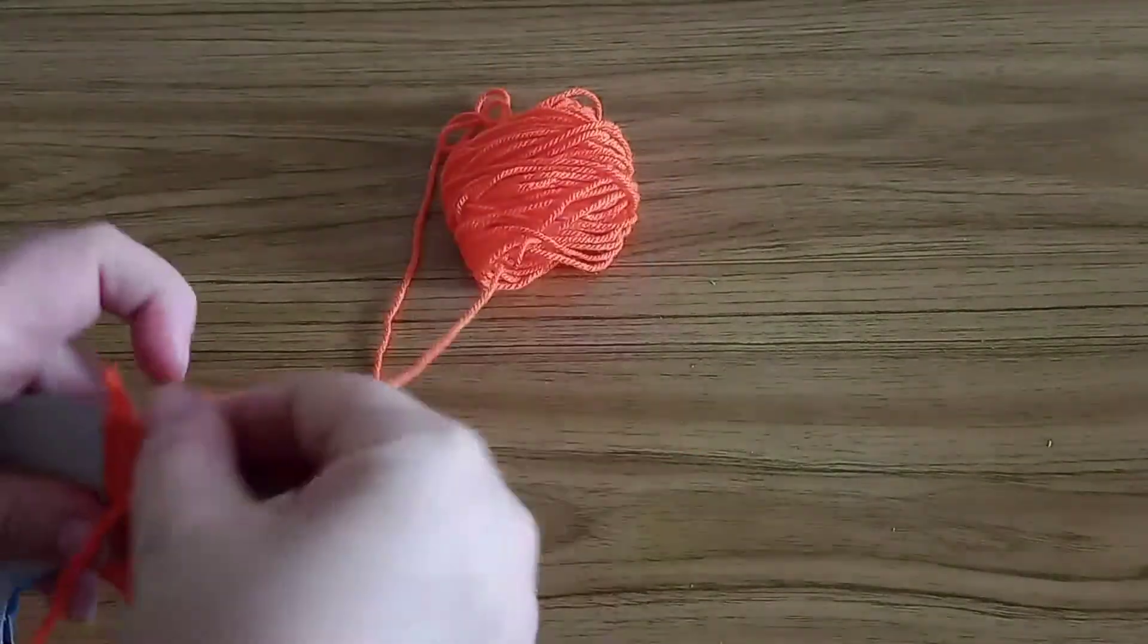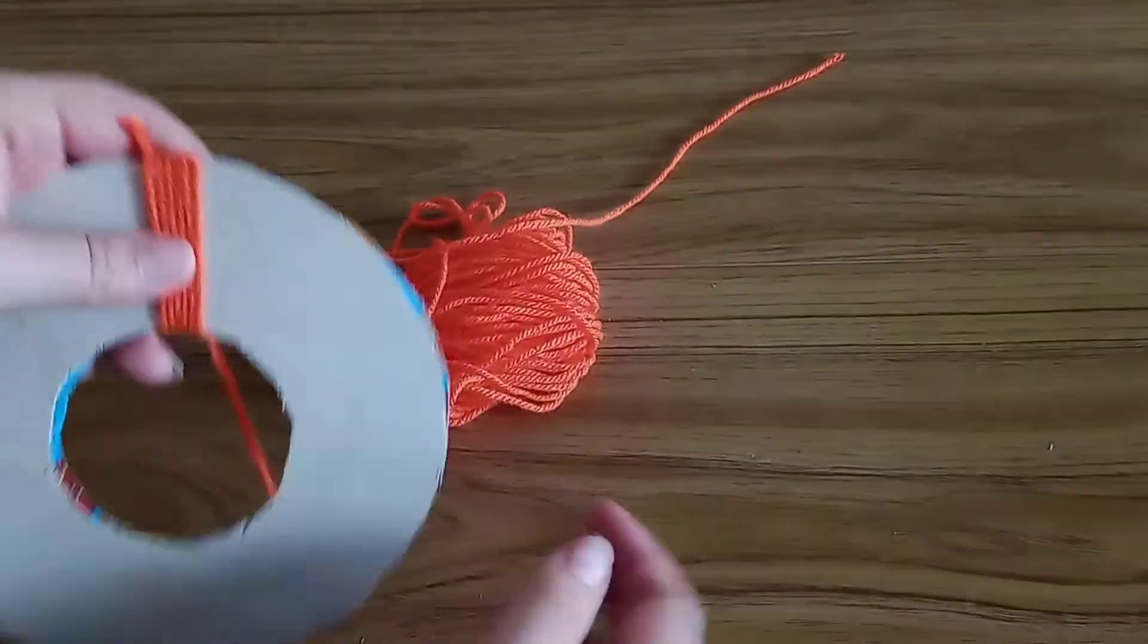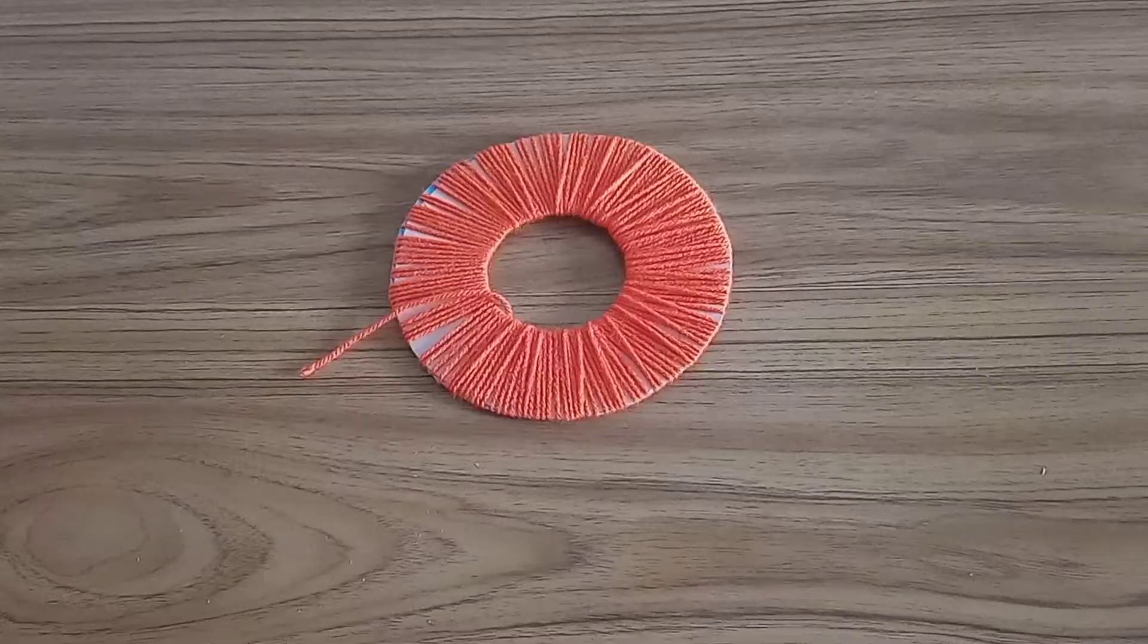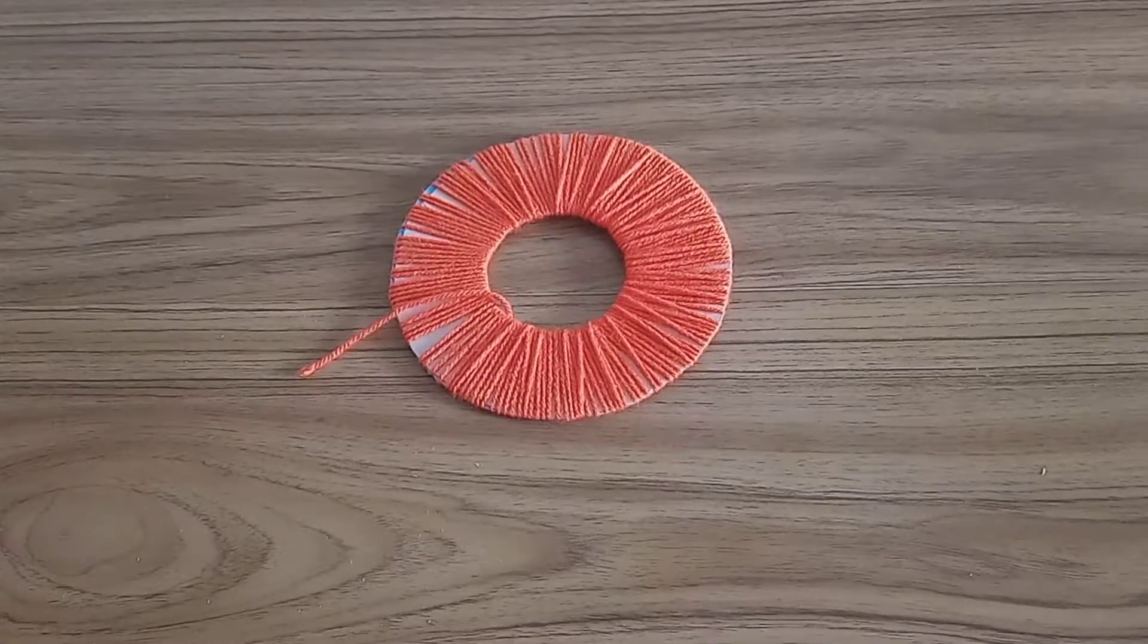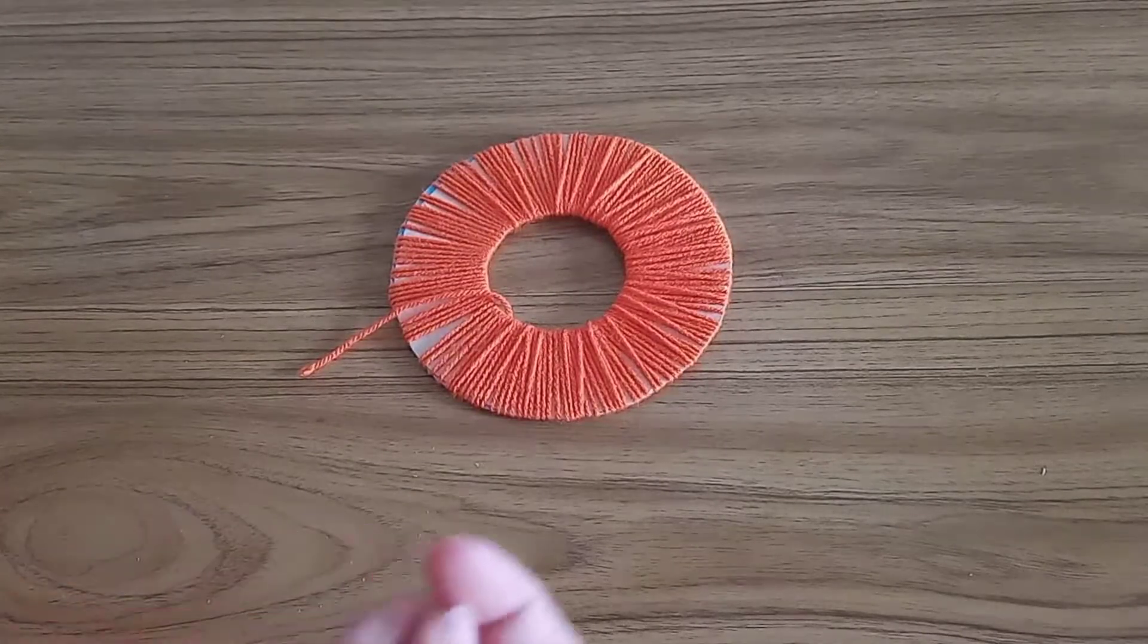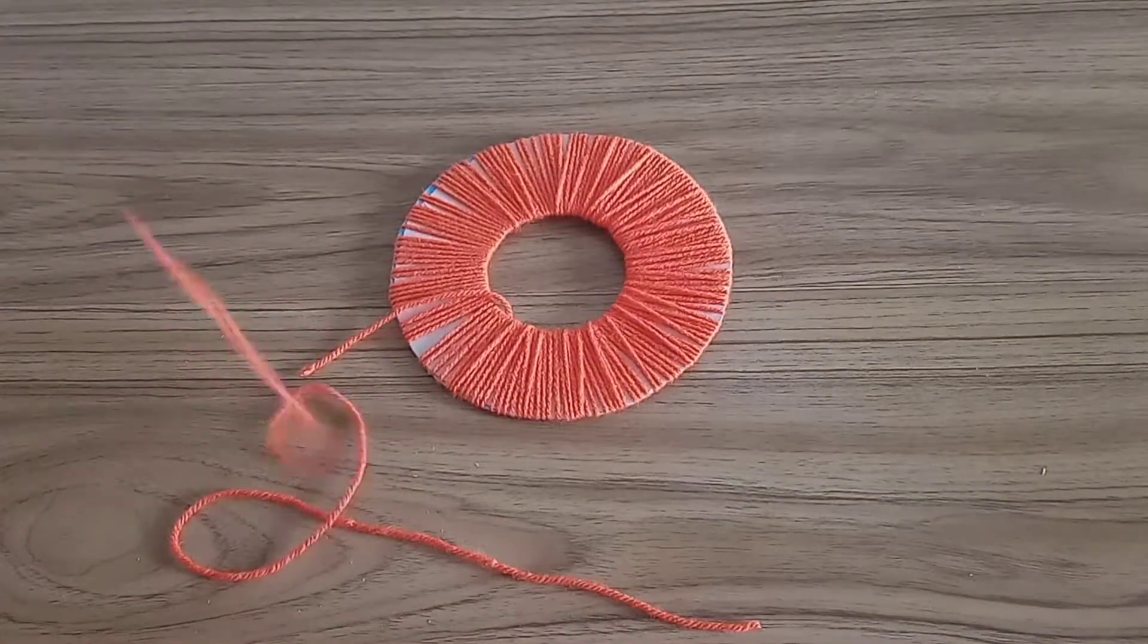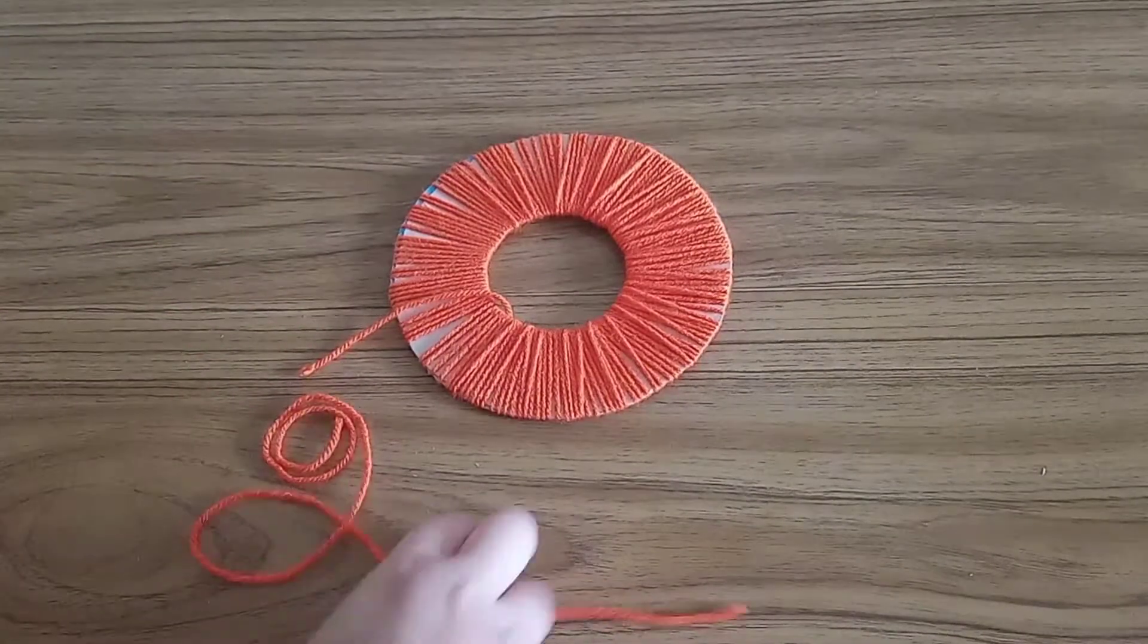You don't really want to be crossing it higgledy-piggledy all over the place because your pom-pom is going to come out really uneven. Just keep doing this until your entire ring is full. If the wool piece you chose isn't long enough you can just tie on more wool. Knots won't cause any hassle and if they do you can find them later and cut them out.